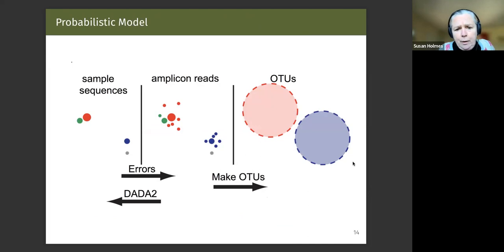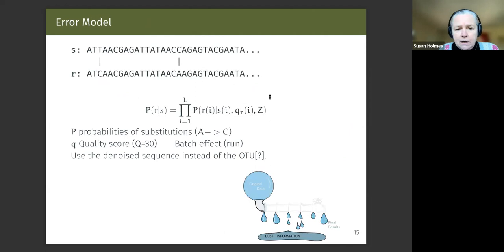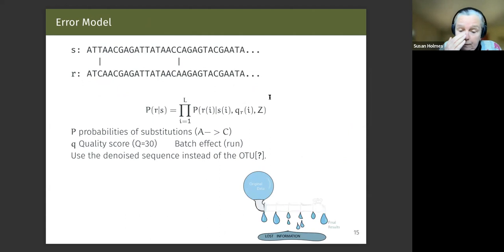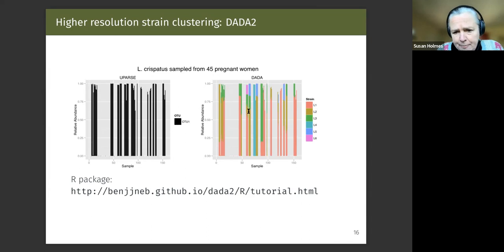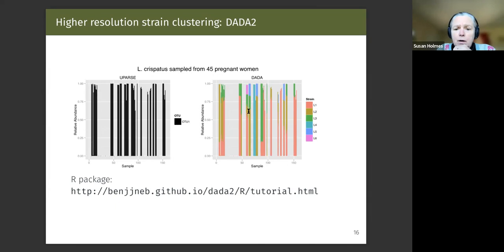We use a probabilistic model that allows you to go back from the amplicon reads — the actual data — to the original sample sequencing. This error model works somewhat like an EM-type model: it's de novo, we start with a certain number of reads, look at the most frequent ones, and if the next read is close to something very frequent, we can say it was highly probable that there's an error. We have a quality score built into the model. The output of this is strains — much higher resolution than OTUs.